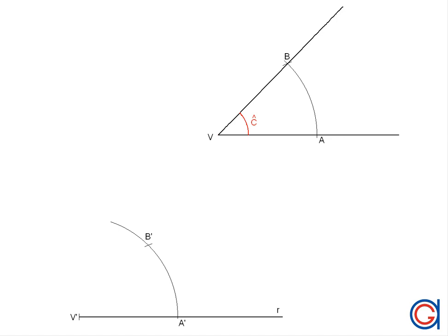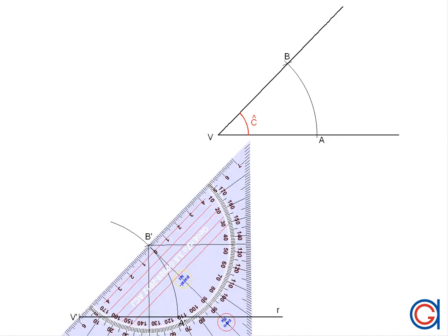So now, using a ruler, we will draw a line from vertex V' through point B' and we will elongate it as can be seen here.